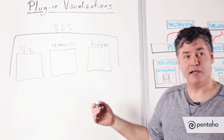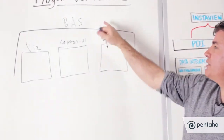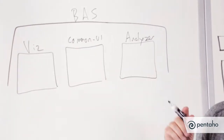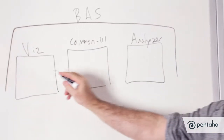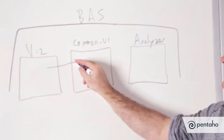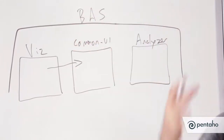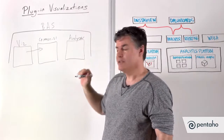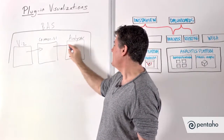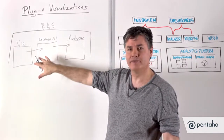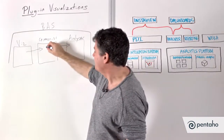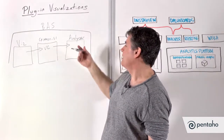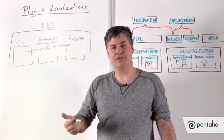What happens is as the server fires up, the plug-in manager identifies and notices these plug-ins, and the visualization registers itself with the visualization controller. It says: I'm a visualization, here's my name, here's how to get a hold of me. When someone starts Analyzer, Analyzer requests the list of visualizations from the visualization controller. This is what enables Analyzer to present a list of options to the user.